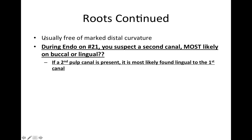Roots continued: they're usually free of a marked distal curvature. Quick question: during endo on number 21, where is a second canal most likely to be found — buccal or lingual? If there's a second pulp canal present, it's most likely going to be found lingual to the first canal.